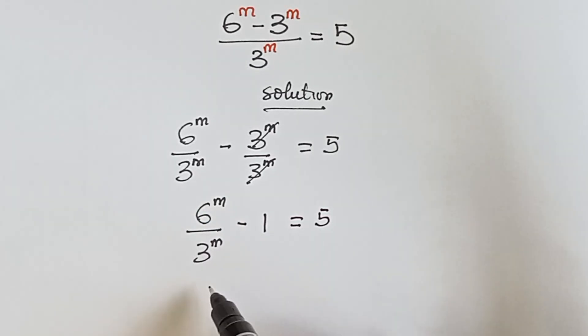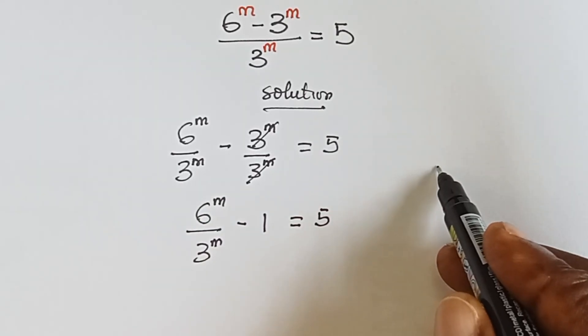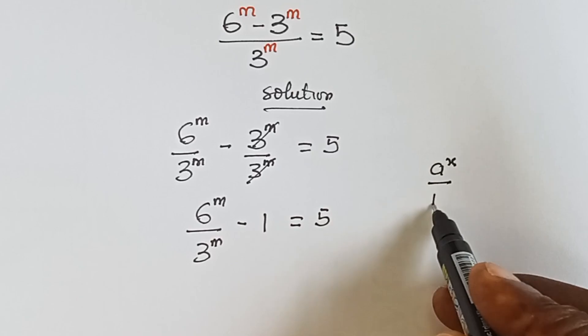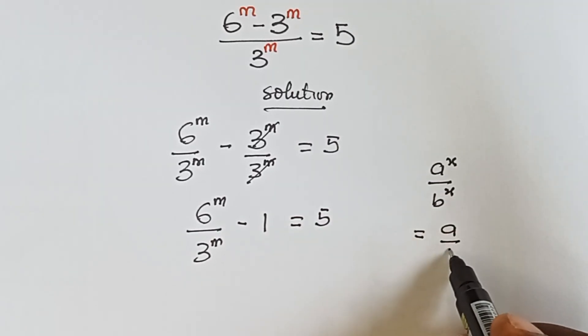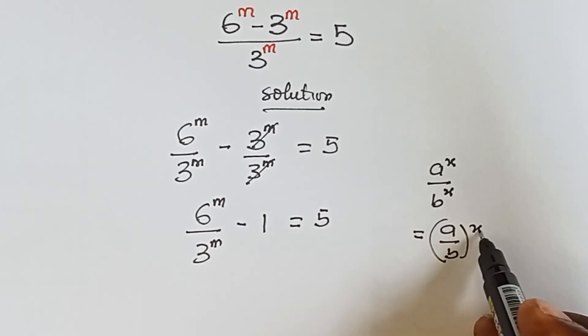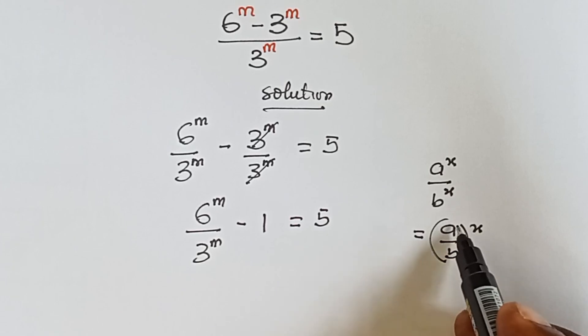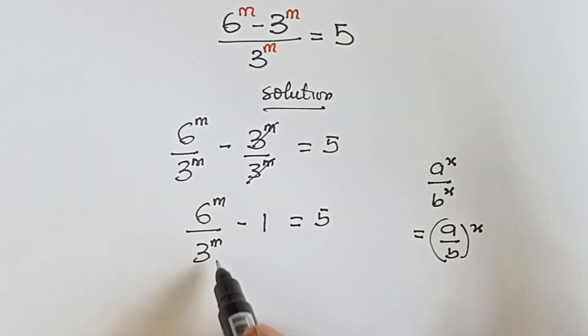One of the laws of exponents says that if we have a raised to power x over b raised to power x, it's the same thing as a over b raised to power x, because that x belongs to both a and b, and that's what we are doing here.